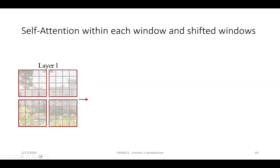Beyond zero-shot, you can also do low-shot or few-shot learning — using just 2 or 4 examples per class and fine-tuning. In that regime, CLIP also outperforms other methods like SimCLR and ResNet. Low-shot learning is useful when you have very few labeled examples.